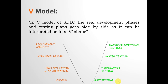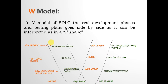However, the limitation of the V model was that there was no QA — Quality Assurance — involvement. QA is process-oriented and monitors all SDLC phases, but this was not present in the V model. The W model came as a solution to this drawback.